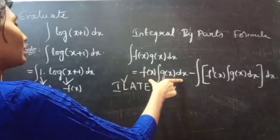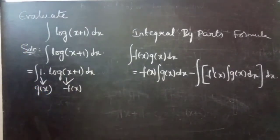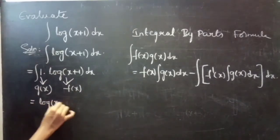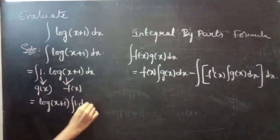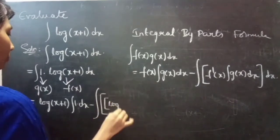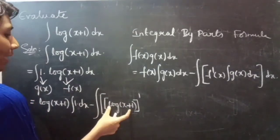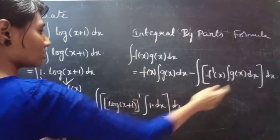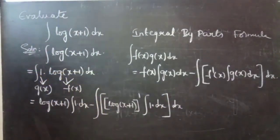Now we are going to apply the integration by parts formula. This equals f(x), that is log(x+1), into integral g(x) dx which is 1 dx, minus integral of f'(x), the derivative of log(x+1), into integral 1 dx, into dx.